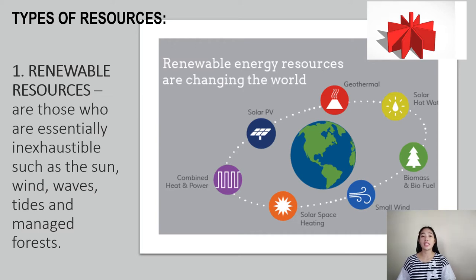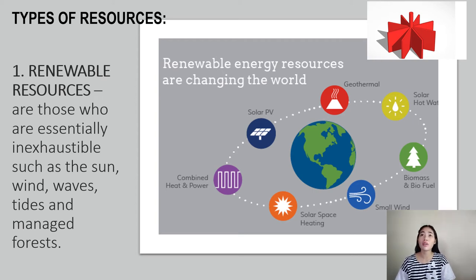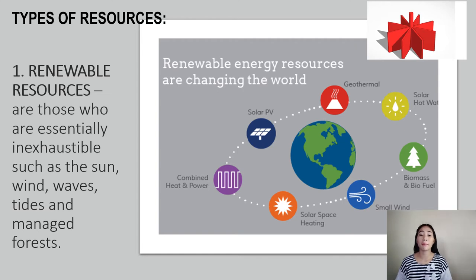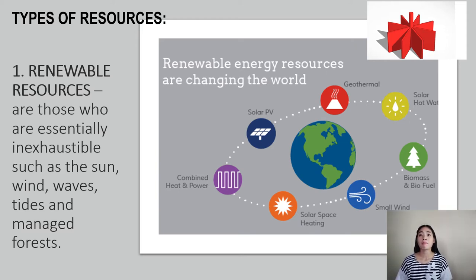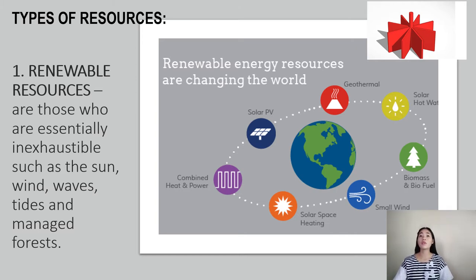Next is geothermal energy — heat within the Earth. It is contained in the rocks and fluids beneath the Earth's crust and can be found as far down as the Earth's hot molten rock, magma. People can capture geothermal energy through geothermal power plants, which use heat from deep inside the Earth to generate steam to make electricity. Wells are drilled one or two miles deep into the Earth to pump steam or hot water to the surface. These power plants are typically found in areas with hot springs, geysers, or volcanic activity.